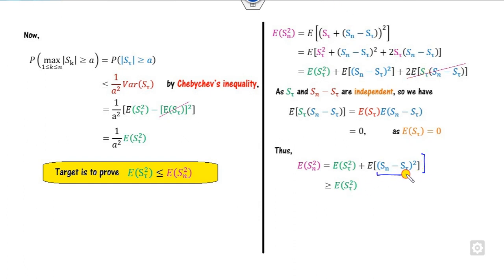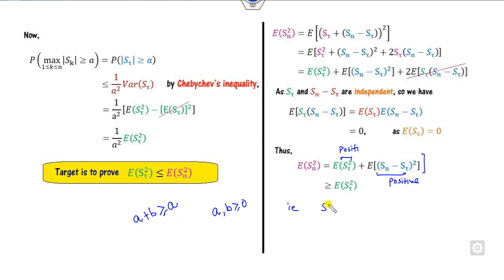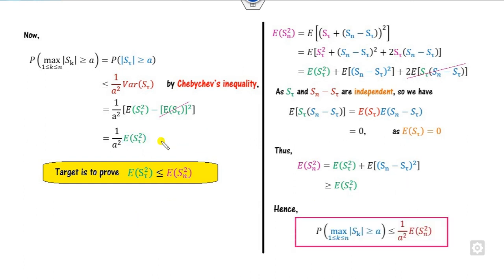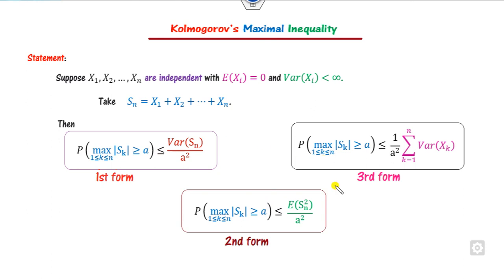Therefore E[S_n²] = E[S_τ²] + E[(S_n - S_τ)²]. Since E[(S_n - S_τ)²] is a square and hence positive, we have E[S_τ²] ≤ E[S_n²]. Substituting this back into equation 1 gives the required proof of the Kolmogorov maximal inequality. Since all three forms are interconnected, from this we can easily derive the variance form and the sum-of-variances form.